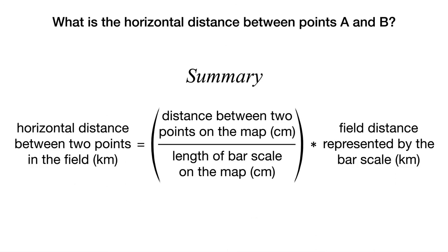To summarize, when you have a problem of this type, the horizontal distance between two points in the field is equal to the ratio of two measurements on the map, multiplied by the field distance represented by the bar scale, which will be printed on the map.